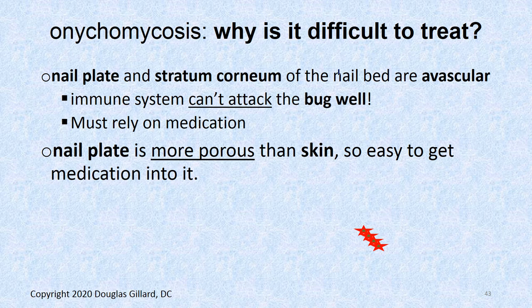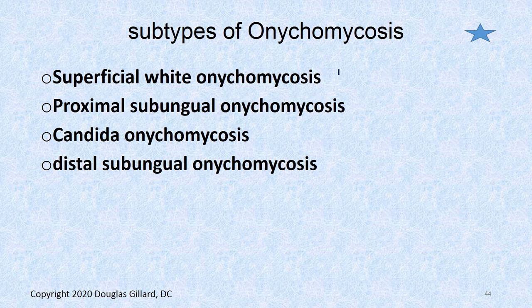We have itraconazole and fluconazole — relatively newer options — but as far as I know, terbinafine is still the king. Why is it so difficult to treat this? You can get medication on athlete's foot really well, and your immune system can get to that one. But under the nail it's a pretty tough place — even though the nail is more porous than skin and you can definitely medicate it, it's avascular. There are just no blood vessels in there, so you can't get your troops in there to kill the bug.